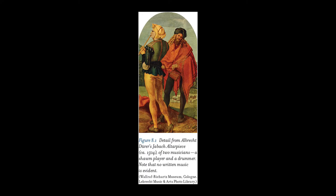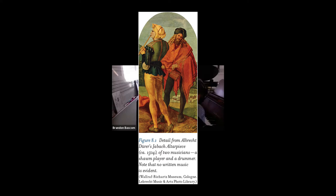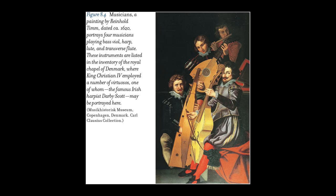Welcome to the overview video for chapter eight. Our learning objectives are: one, to describe the principal instrument families from the Renaissance and how they are similar or different from their medieval predecessors; two, to describe the principal genres of 16th century instrumental music and know which are derived from vocal music, dancing, or improvisation; three, to identify some of the composers and works associated with instrumental music in the Renaissance; and four, to explain what is distinctive about Venice and Venetian music in the late 16th and early 17th centuries.